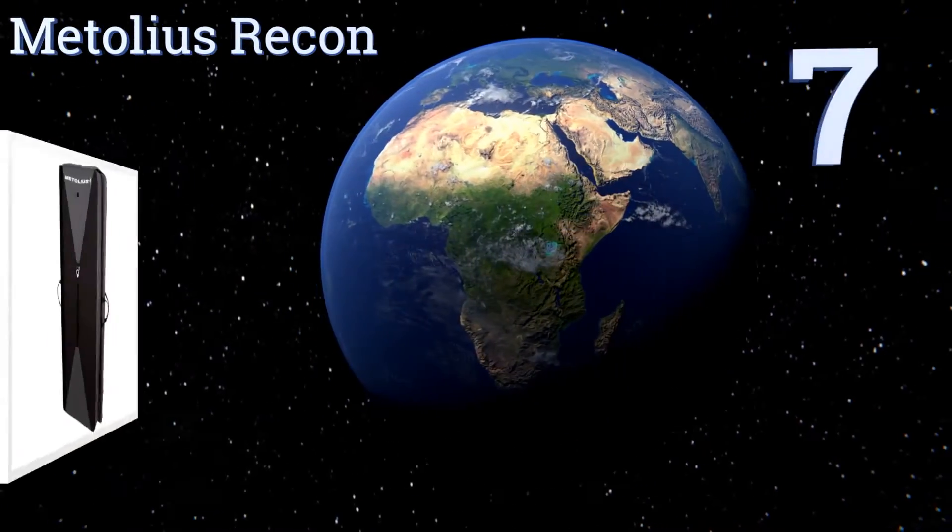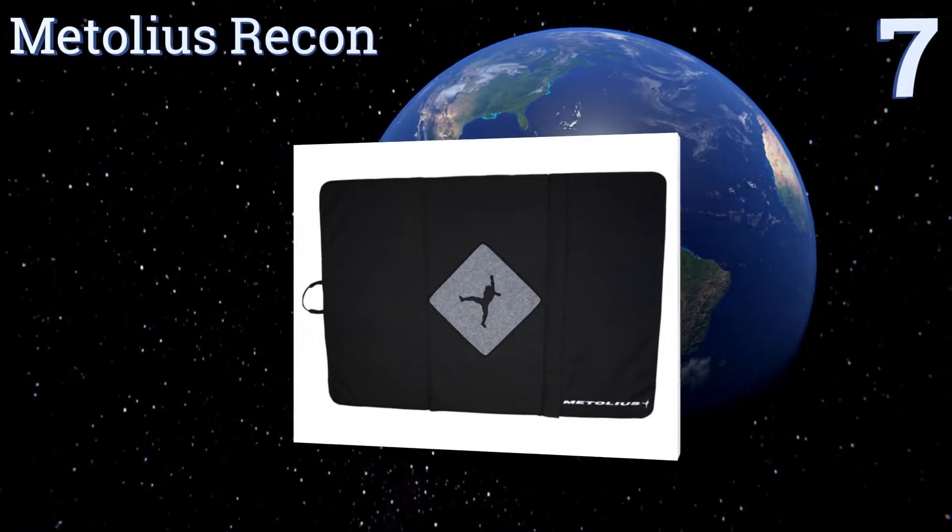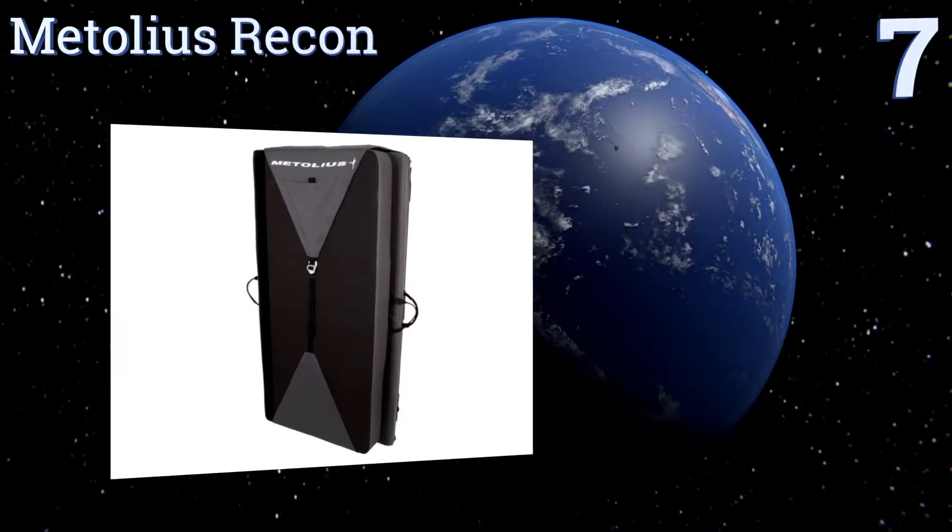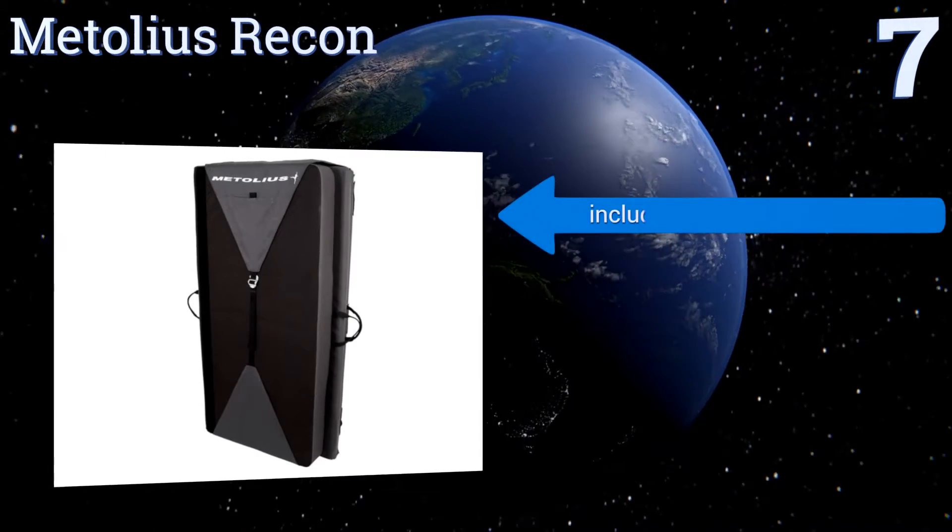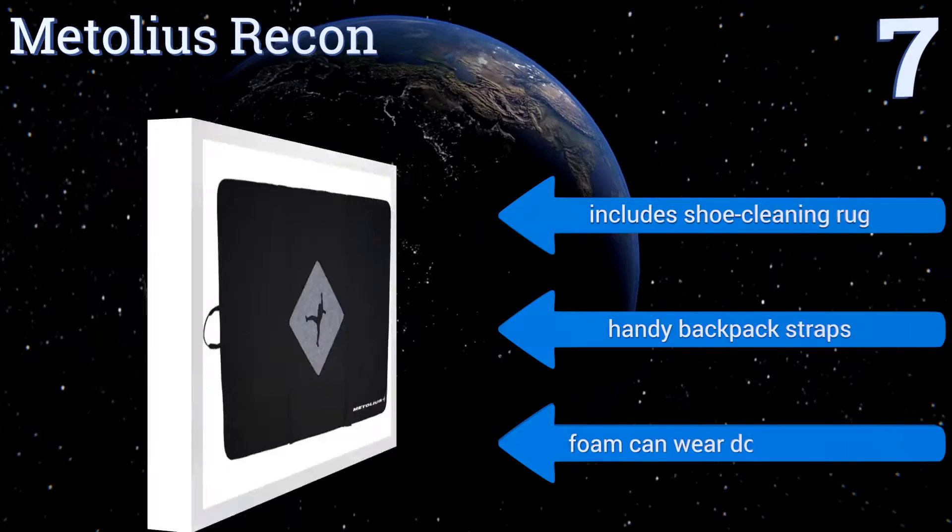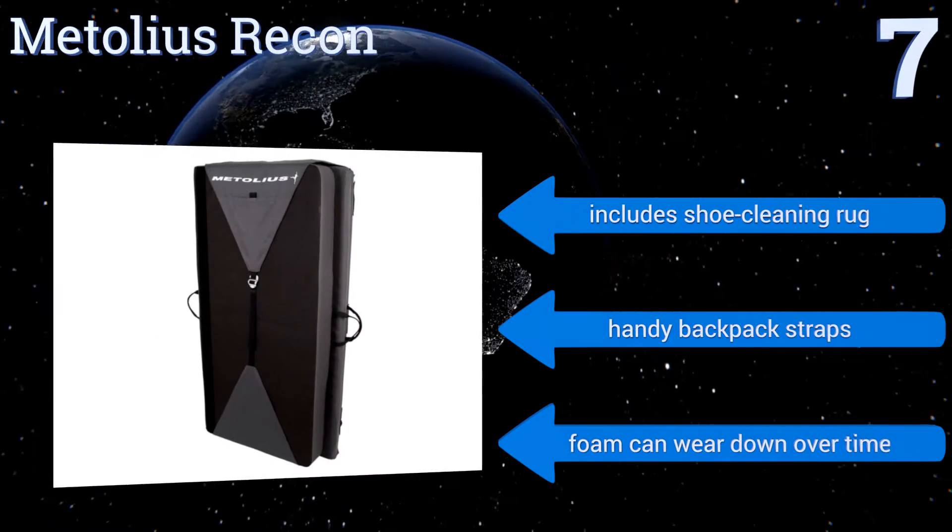Starting off our list at number seven, the Metolius Recon features more surface area than most landing pads but narrows significantly when folded, making it simple to transport and store. Ballistics on the bottom help keep it resilient even after absorbing falls for months or years. It includes a shoe cleaning rug and handy backpack straps, but the foam can wear down over time.